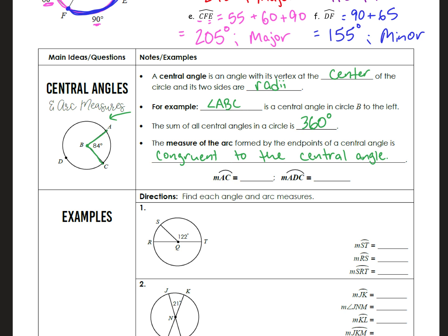Yesterday we focused mostly on arcs - minor arcs, semicircles, and major arcs. Today we're going to have central angle measures and translate those into arc measures. For example, the measure of arc AC is simply equal to the central angle of 84 degrees.